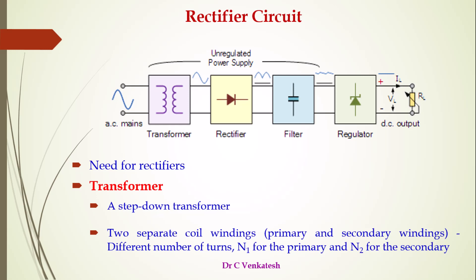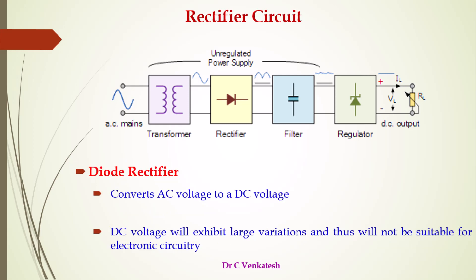First, we are going to see the transformer. A transformer is a step-down transformer that steps down the high AC voltage to a lower AC voltage to be inputted to the rectifier. It consists of two separate coil windings — primary and secondary windings — which have a different number of turns: N1 for the primary side and N2 for the secondary side. The AC mains is given to the transformer, and the transformer output is a step-down voltage.